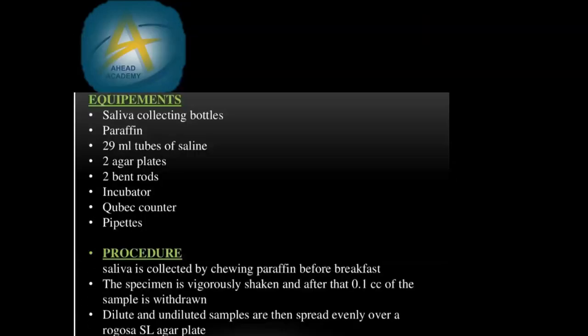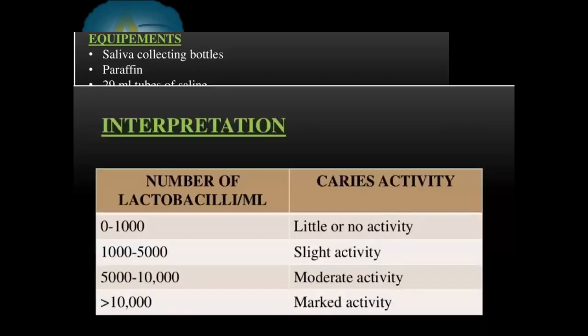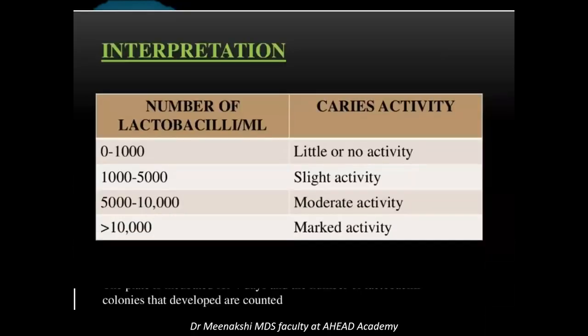Equipment used includes: saliva collecting bottles, paraffin, 29 ml of saline, bent rods, agar plates, colony counter, and pipettes. Saliva is collected while chewing paraffin before breakfast on an empty stomach. It is vaguely shaken, diluted, and the undiluted samples are spread evenly over a Rogosa SL agar plate, which is incubated for about four days. The number of Lactobacilli colonies developed are counted and classified as no activity, slight activity, moderate activity, or marked activity.